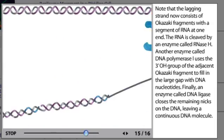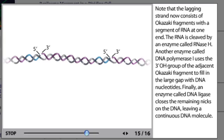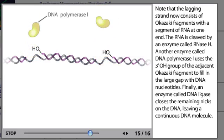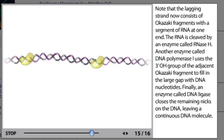Note that the lagging strand now consists of Okazaki fragments with a segment of RNA at one end. The RNA is cleaved by an enzyme called RNase H. Another enzyme called DNA polymerase 1 uses the 3 prime OH group of the adjacent Okazaki fragment to fill in the large gap with DNA nucleotides. Finally, an enzyme called DNA ligase closes the remaining nicks on the DNA, leaving a continuous DNA molecule.